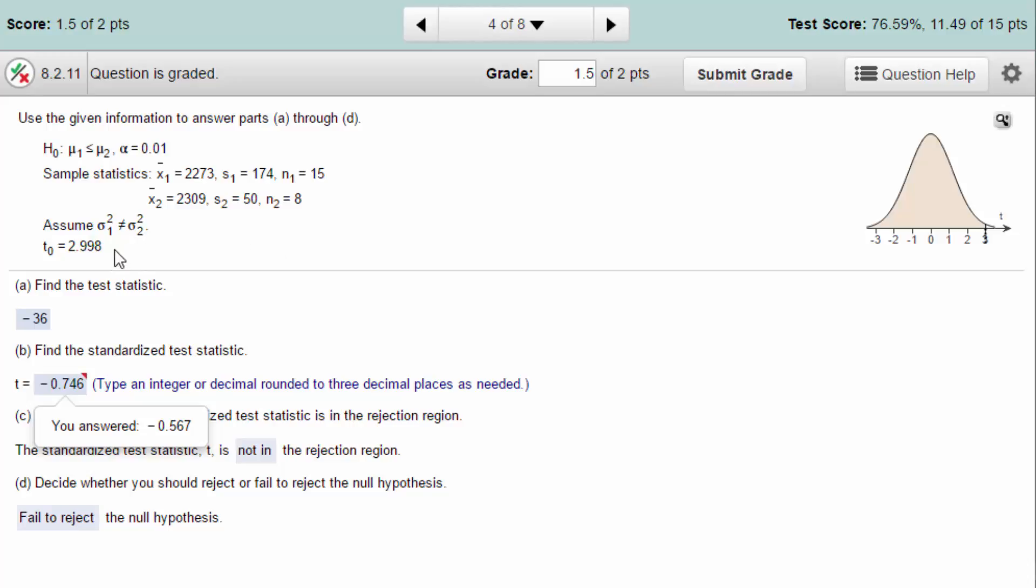The other thing that is significant about this problem and the one thing I think that has tripped so many people up is that you're given that sigma 1 squared is not equal to sigma 2 squared. Sigma squared, of course, is variance. That means the variances are not equal.